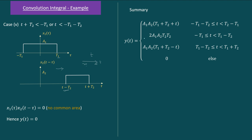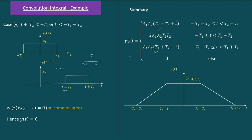Summarizing all four cases: y(t) = 0 for t < −t1 − t2; y(t) = a1·a2·(t + t1 + t2) from −t1 − t2 to t2 − t1 (positive slope); y(t) = 2·a1·a2·t1 from t2 − t1 to t1 − t2 (constant, flat top); and y(t) = a1·a2·(t1 + t2 − t) from t1 − t2 to t1 + t2 (negative slope). Note there is a typo corrected: the boundary should be t2 − t1, not t1 − t2.